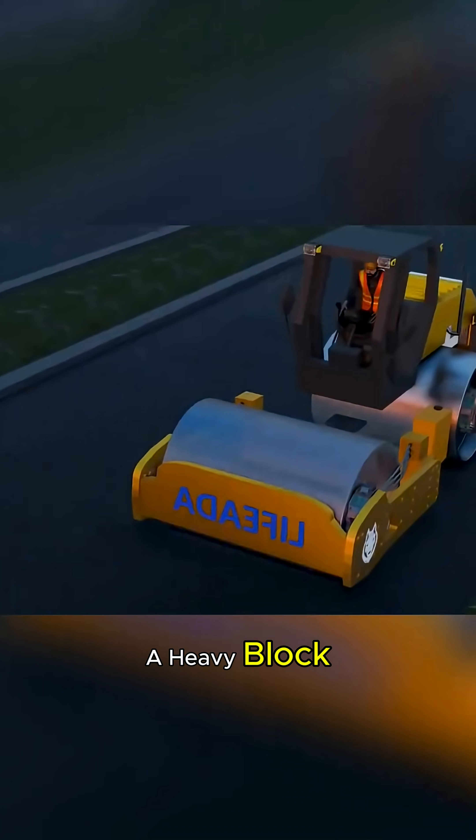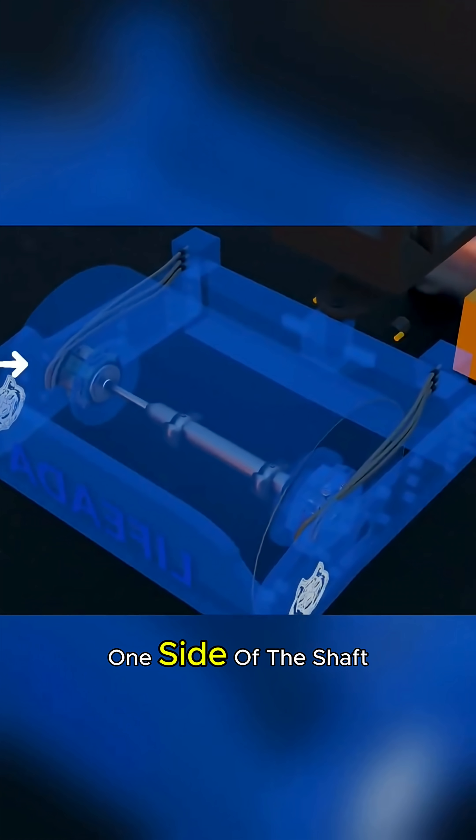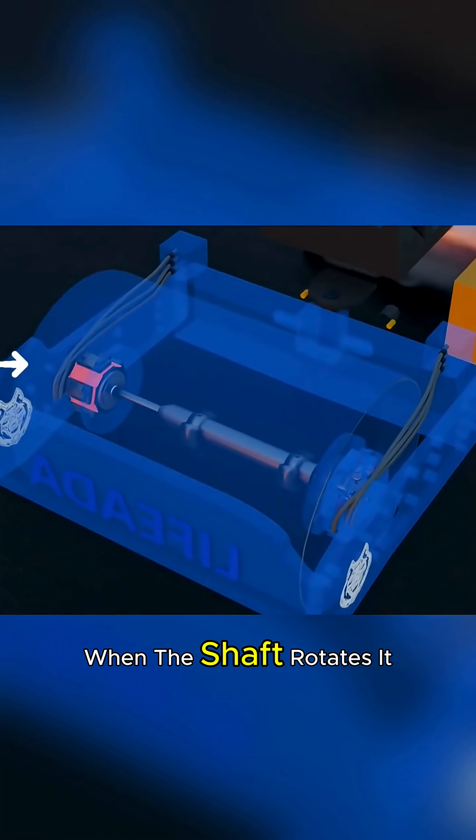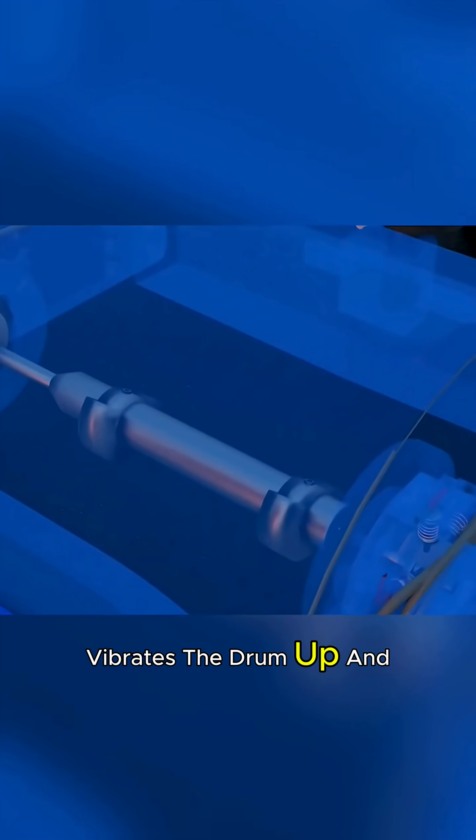Not by its weight. A heavy block counterweight is applied to one side of the shaft. When the shaft rotates, it vibrates the drum up and down.